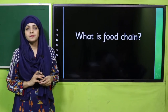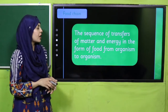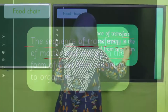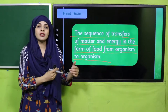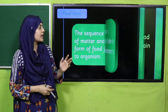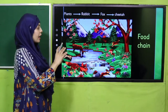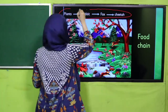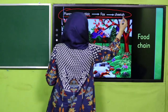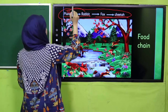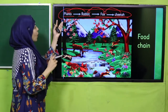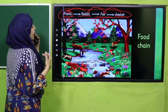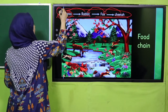What is a food chain? A food chain is the sequence of transfer of matter and energy in the form of food from organism to organism. For example: plants → rabbit → fox → cheetah. This means that rabbits eat plants, foxes eat rabbits, and cheetahs eat foxes.